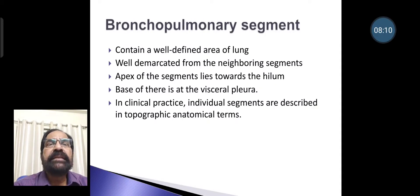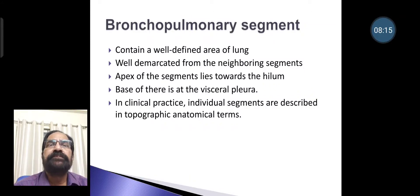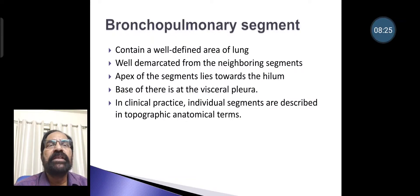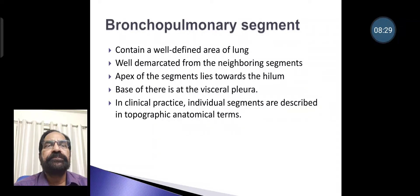A bronchopulmonary segment contains a well-defined area of lung, well demarcated from neighboring segments. The apex of the segment lies towards the hilum, and the base is at the visceral pleura. In clinical practice, individual segments are described in topographic anatomical terms.